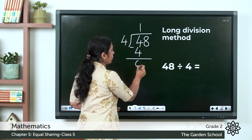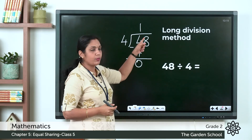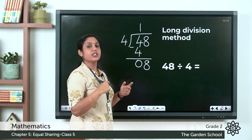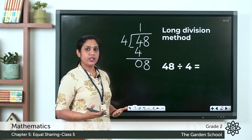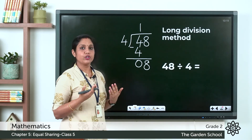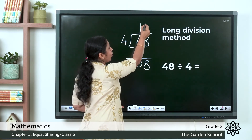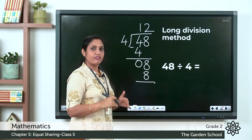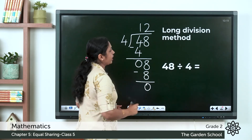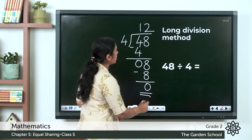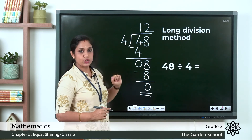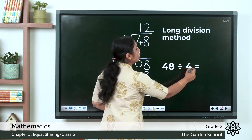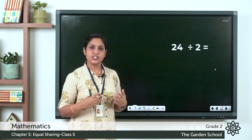Subtract 4 minus 4 equals 0. Our division is not finished because there is one more number left. Bring the 8 downwards. Now divide 8 by 4 — 4 ones are 4, 4 twos are 8, so write 2 on top of the ones place. Multiply: 4 twos are 8, write below the 8. Subtract: 8 minus 8 equals 0. No other numbers remain, so we're finished. The answer is 48 divided by 4 equals 12. The quotient is always written on top.